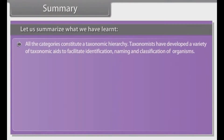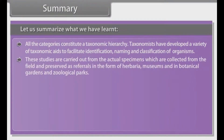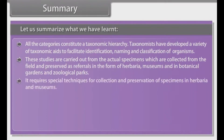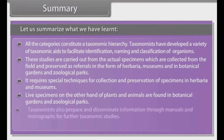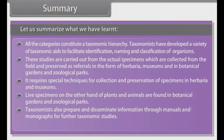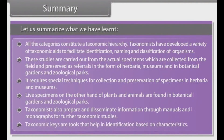All the categories constitute a taxonomic hierarchy. Taxonomists have developed a variety of taxonomic aids to facilitate identification, naming and classification of organisms. These studies are carried out from actual specimens collected from the field and preserved as referrals in the form of herbaria, museums, botanical gardens and zoological parks. It requires special techniques for collection and preservation of specimens. Living specimens of plants and animals are found in botanical gardens and zoological parks. Taxonomists also prepare and disseminate information through manuals and monographs for further taxonomic studies. Taxonomic keys are tools that help in identification based on characteristics.